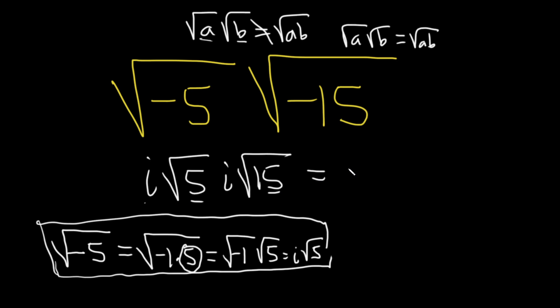So i times i is i squared. And then 5 times 15 is 75. So you want to get to the point where at least one of them is non-negative. We can simplify this a little bit. This is, well, i squared is negative 1. And then the square root of 75, you can think of that as 25 times 3.